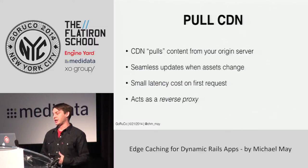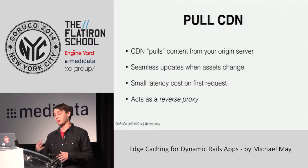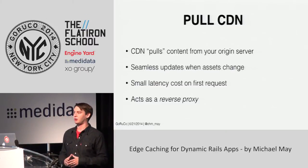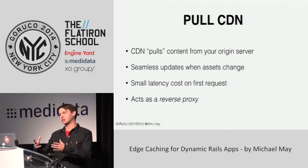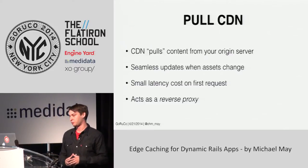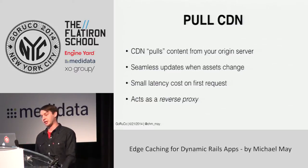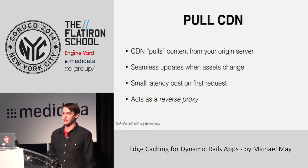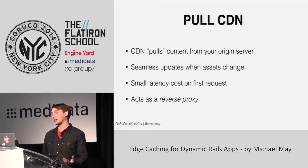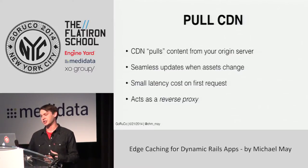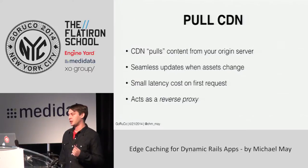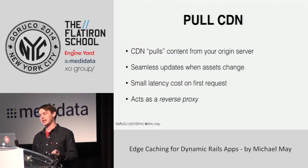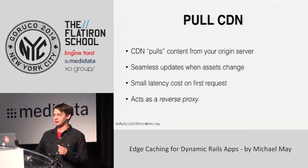If you have a lot of content and you're pushing it out to your edge while your origin server is under high load, this is just going to increase your load there. The other type of CDN — and the one we're going to talk about for the rest of the talk — is called a pull CDN. The way this works is the CDN actually pulls content from your origin server. This is great for developers because we get seamless updates when content changes — we don't have to worry about syncing data to the edge.